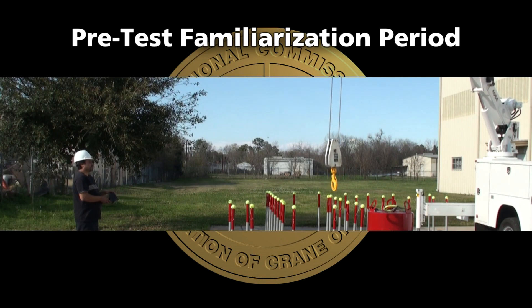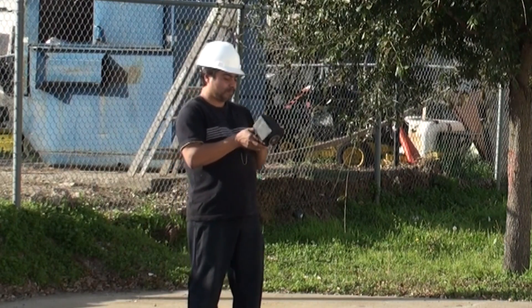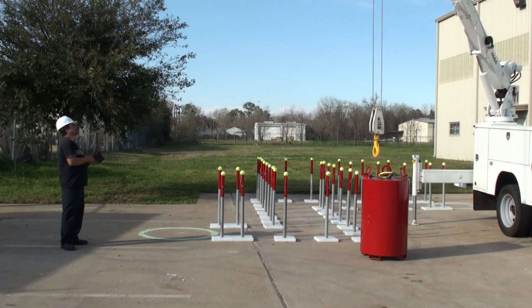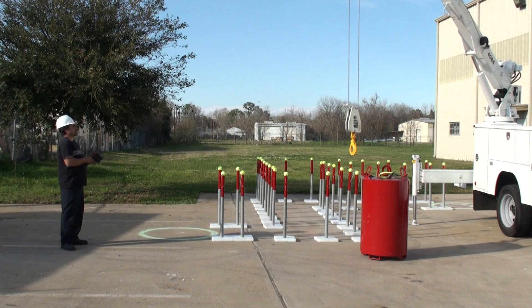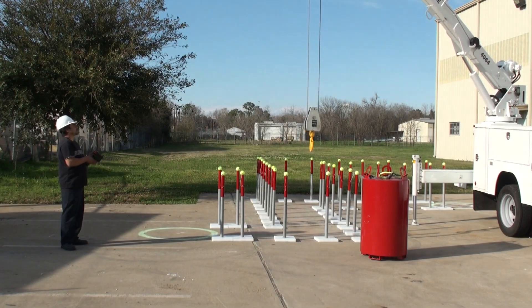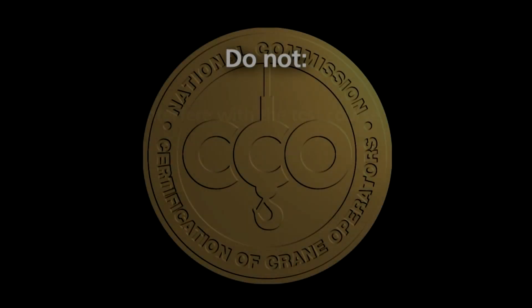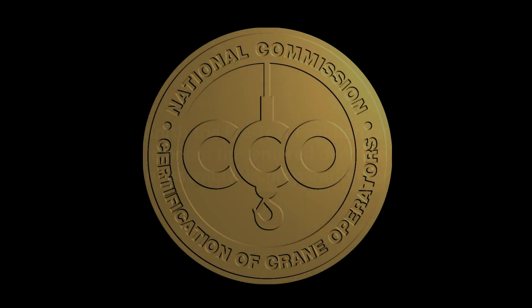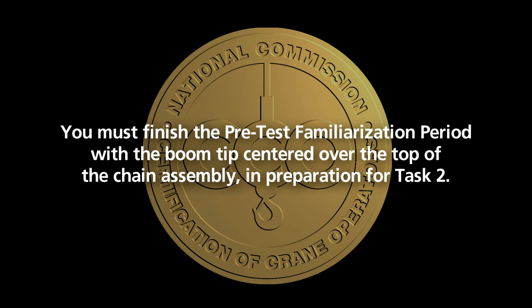Pre-test familiarization period. You will be allowed five minutes to familiarize yourself with the crane and to examine anything on it that you feel is necessary to operate it comfortably. You will be allowed to get the feel of the controls and are permitted to run the crane through its functions. Do not interfere with the test course, attempt to lift the test weight, or shadow the corridor. You must finish the pre-test familiarization period with the boom tip centered over the top of the chain assembly in preparation for Task 2.